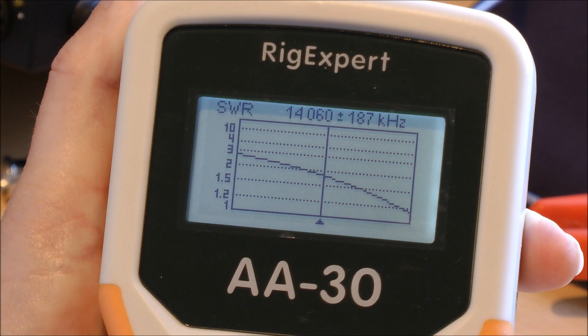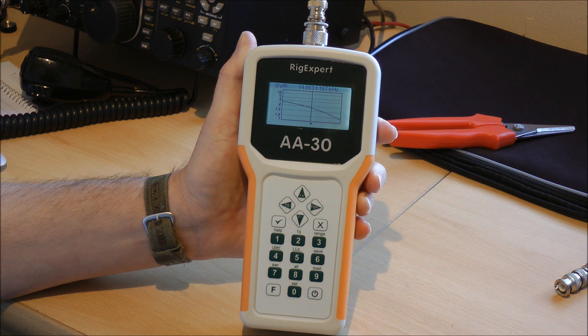The higher up the range you go, at the AA200 for instance you can do a multi SWR check. This being the basic analyzer, you can't do that. It's still very, very good if you want to do a check on where the SWR is.